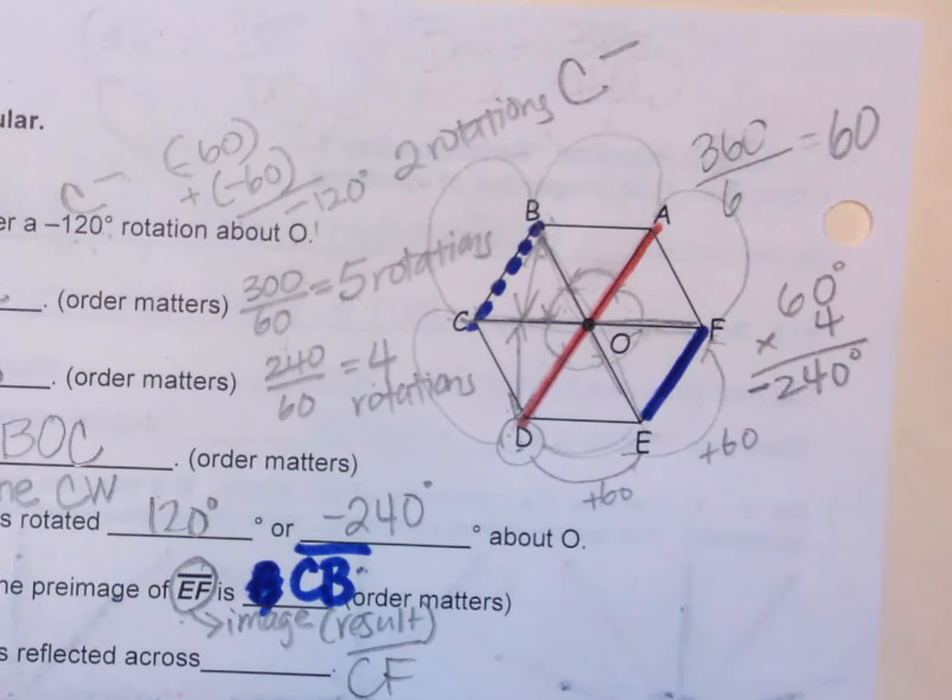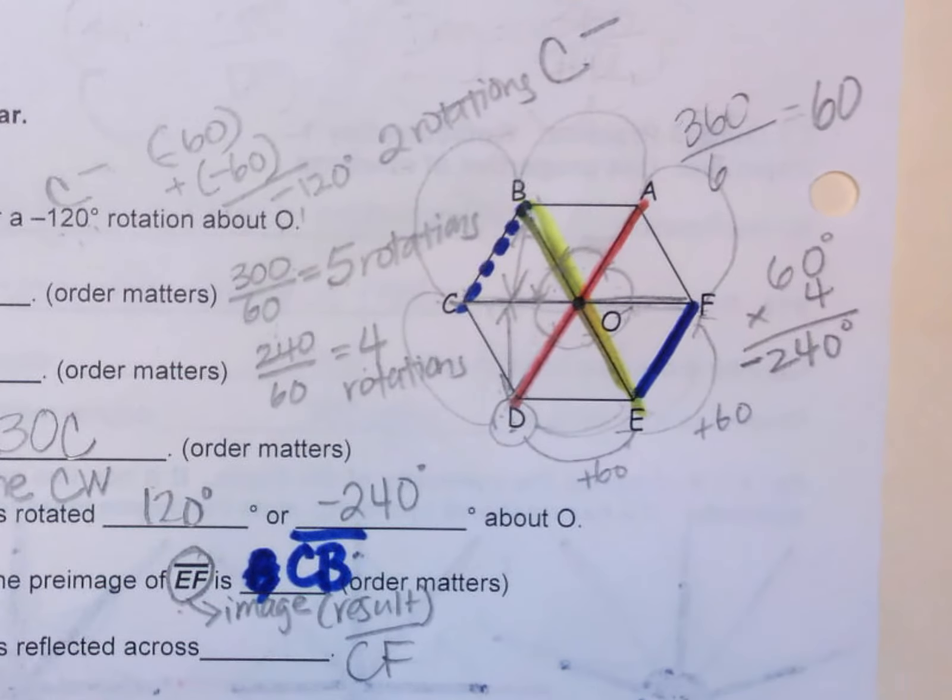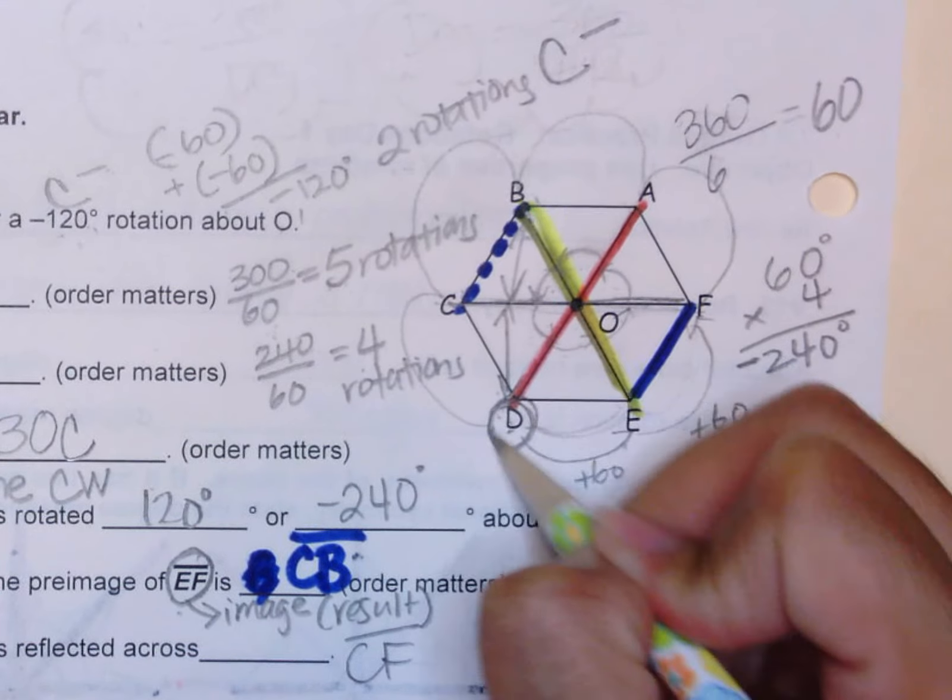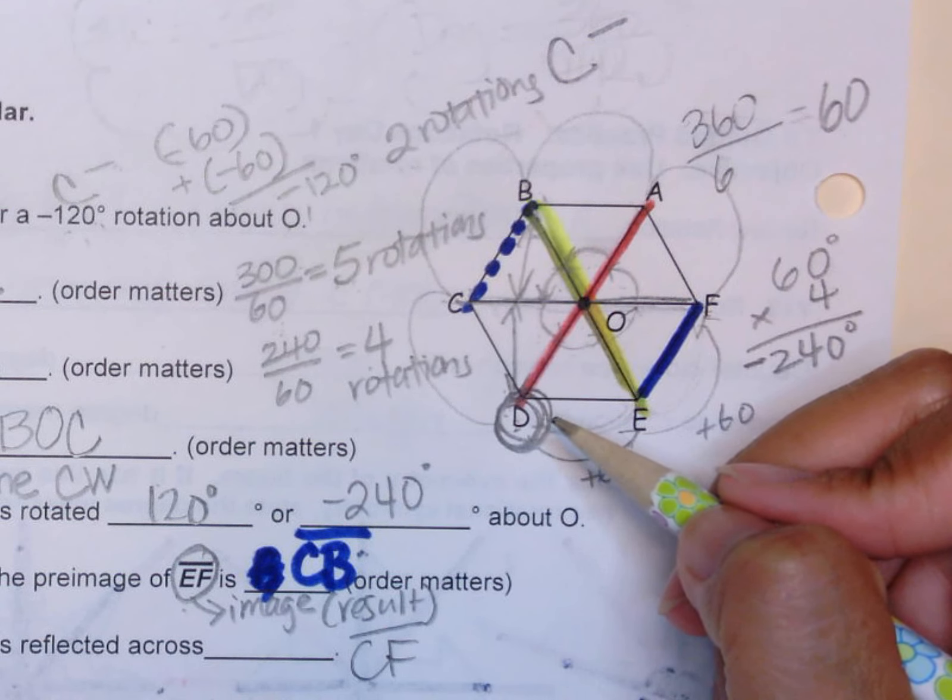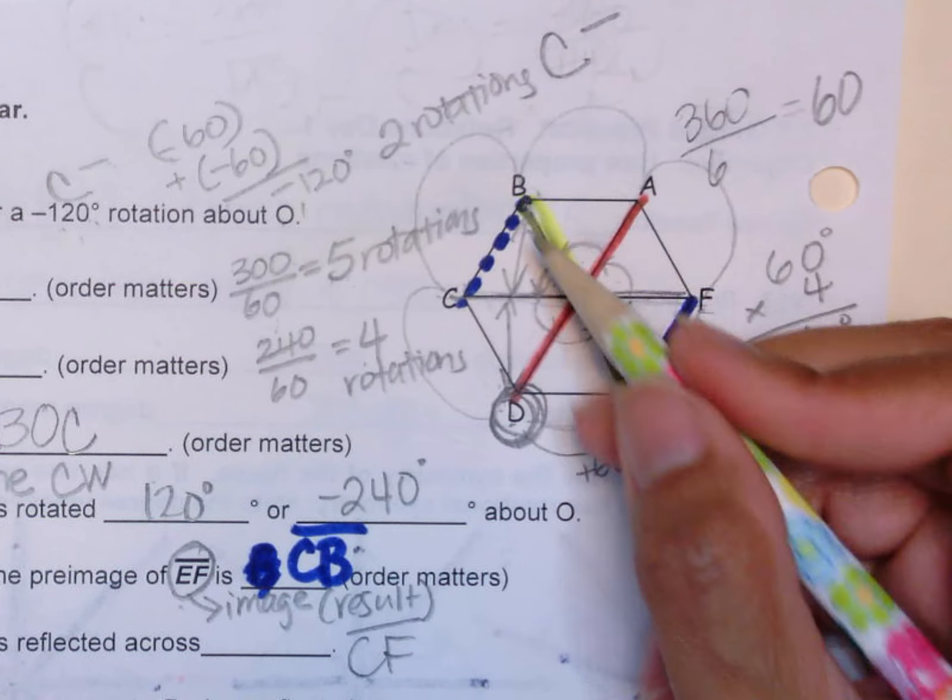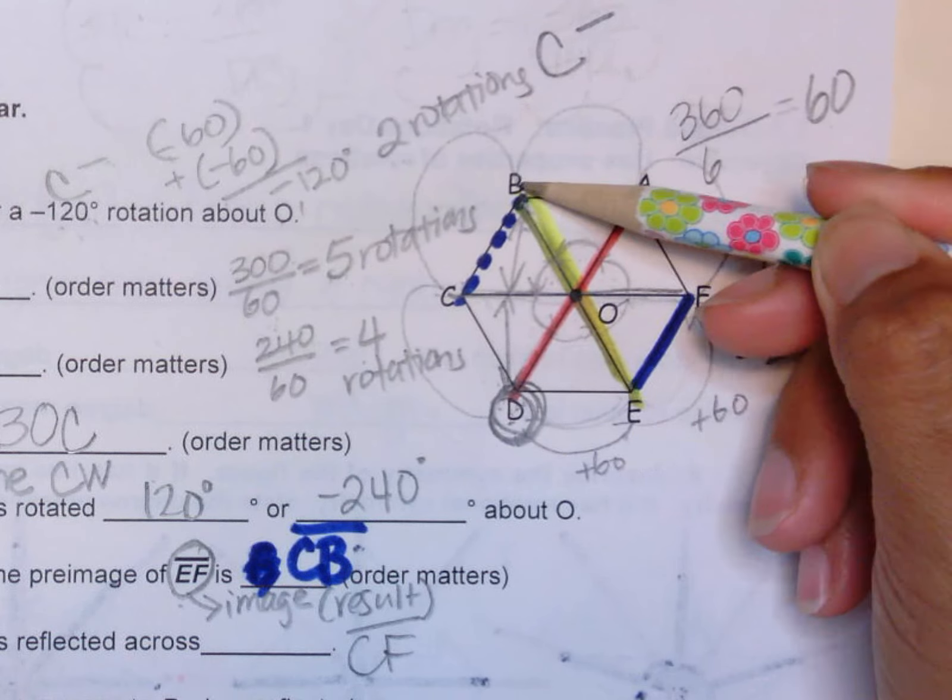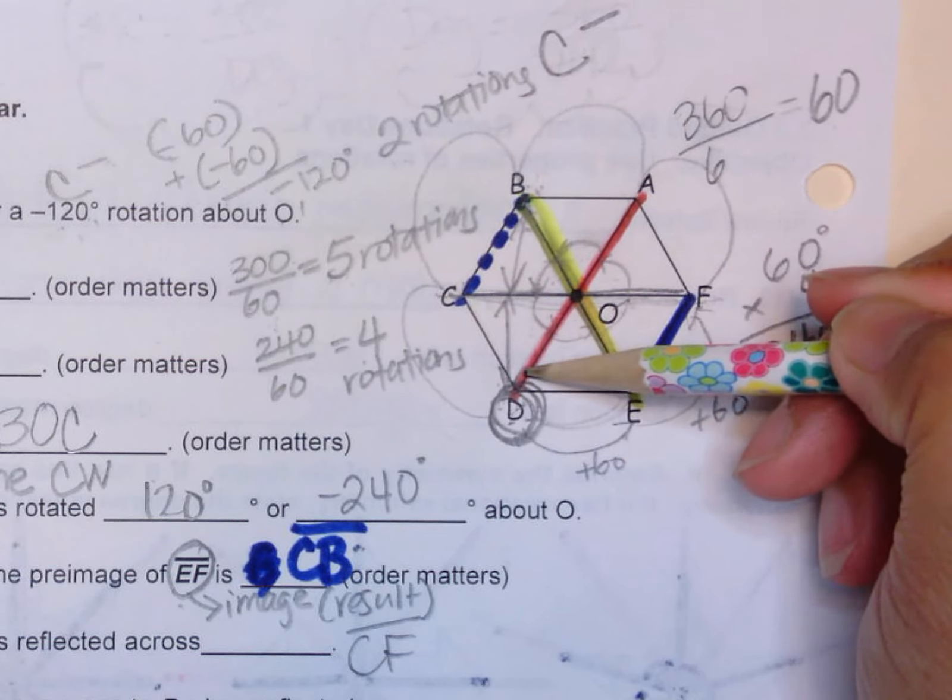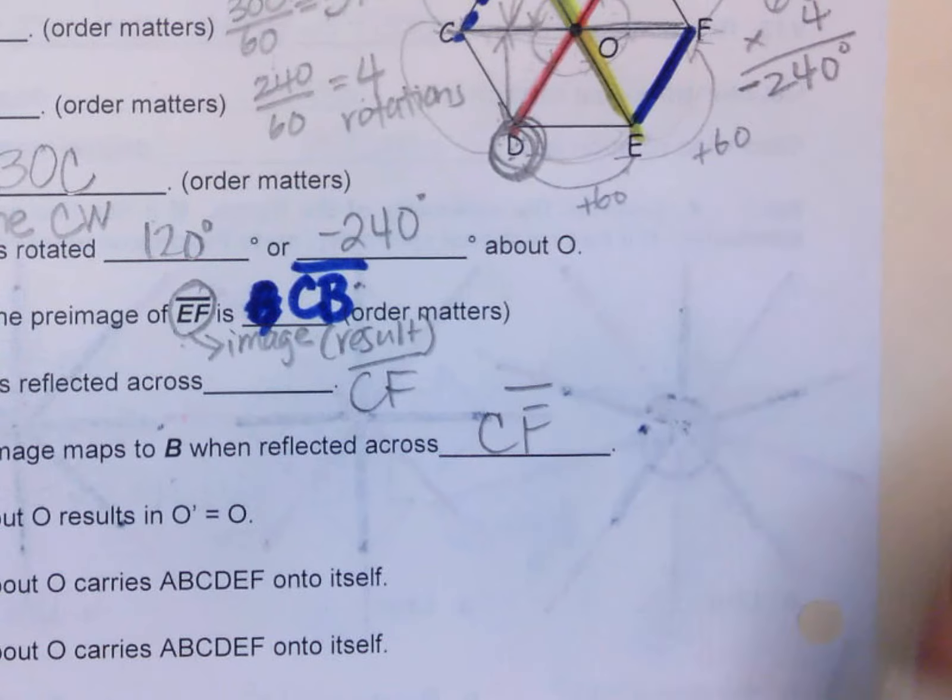If you fold along BE, let me use a highlighter, if I fold along BE right here, I would have F matched to D because it's one unit away from my line of reflection. So D is my image. Since D is my image, it says that image, which is D, maps to B, so the result is B when you reflect it along what line. Here's D, here's B. The midline right here, when you fold it, will map onto each other. It's just like number 20. So the answer is the same, CF.